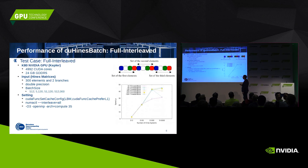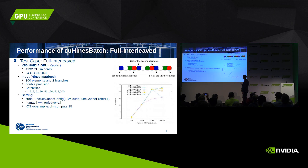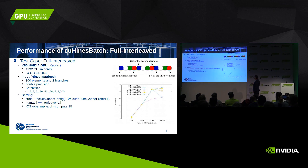However, when we use full interleaf, the story changes radically. For the same test case, we obtain very good scalability. What is most important is that from 51,200 elements up to the last point — more than half a million neurons — we still continue scaling. That is very important for us.